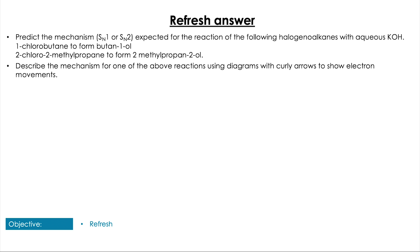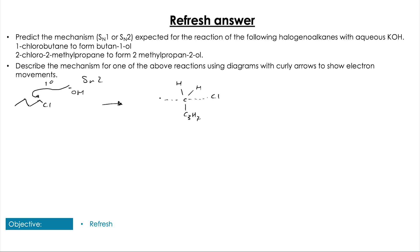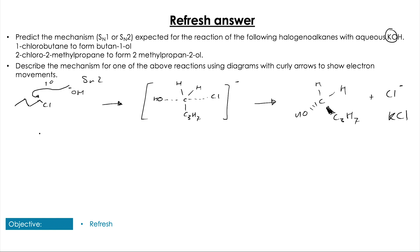Hopefully you saw that the 1-chlorobutane is our primary. With primary, we're not going to have the positive inductive effect enough to form a stable intermediate carbocation. So instead, we're going to have an SN2 reaction where the nucleophile attacks that electron-deficient carbon, forming our intermediate anion where we have the chlorine and hydroxide group partially bonded. That then goes on to form our primary alcohol product and leaves Cl- over.